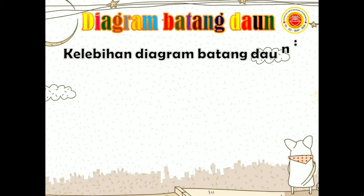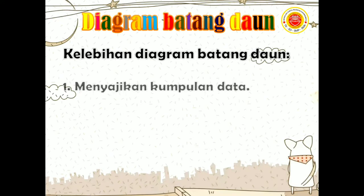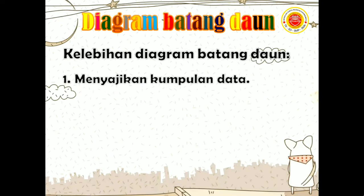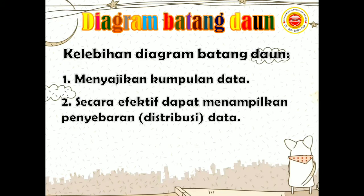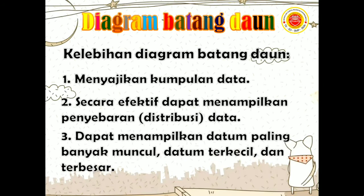Kelebihan diagram batang daun: pertama, menyajikan kumpulan data. Kedua, secara efektif dapat menampilkan penyebaran atau distribusi data. Ketiga, dapat menampilkan datum paling banyak muncul, datum terkecil dan terbesar. Ingat, datum adalah informasi atau keterangan yang diperoleh dari suatu pengamatan yang berupa angka, simbol, atau bahasa.